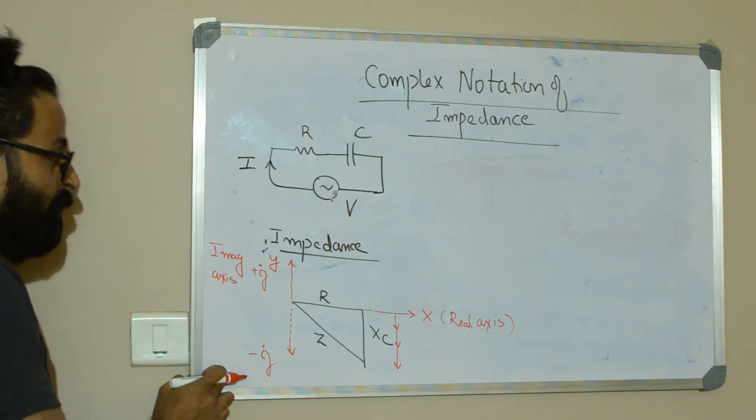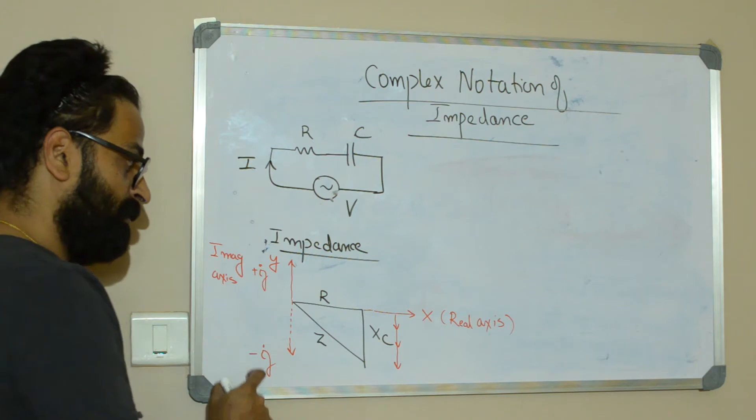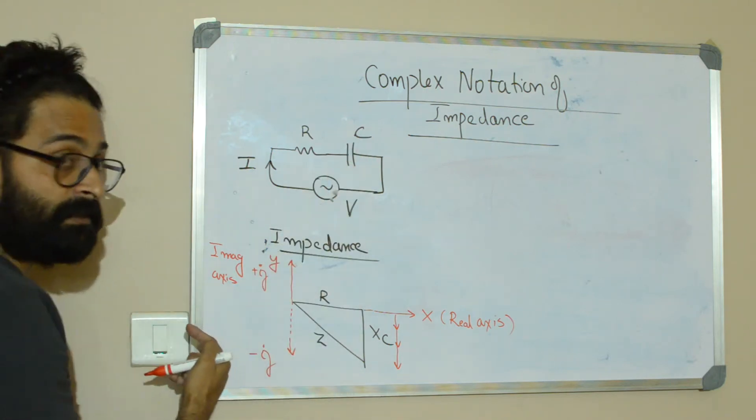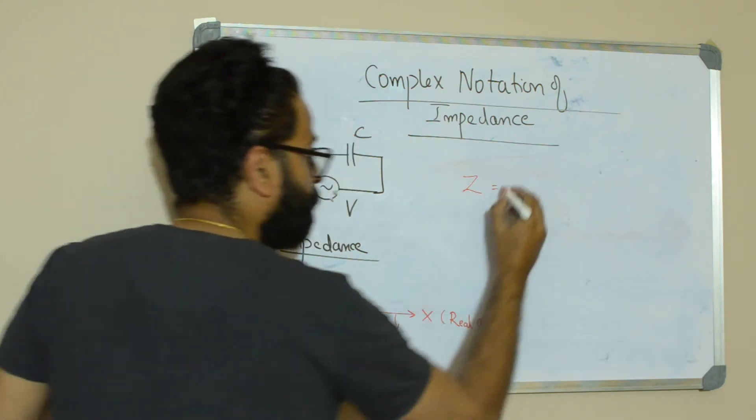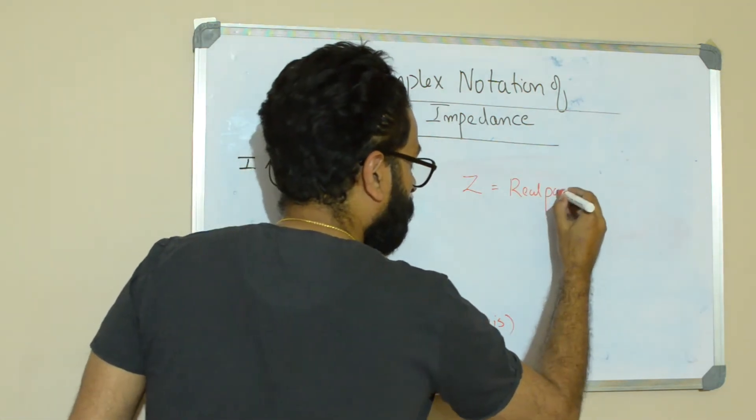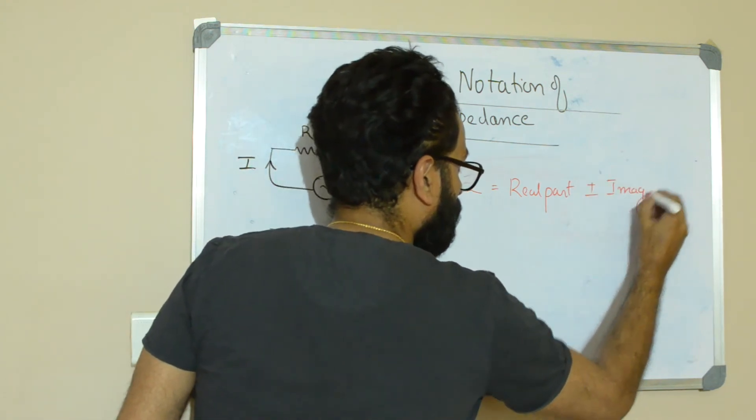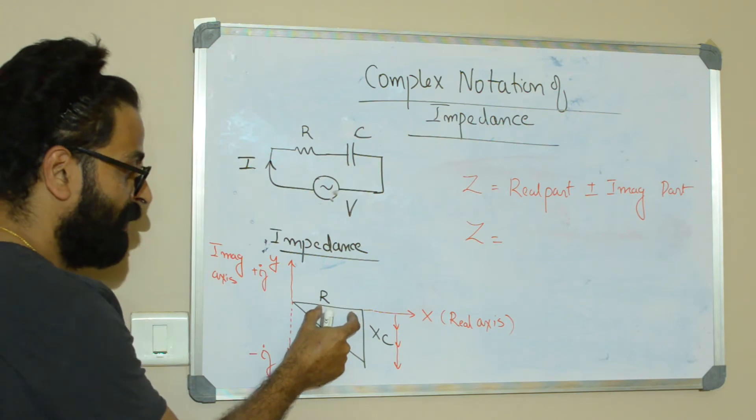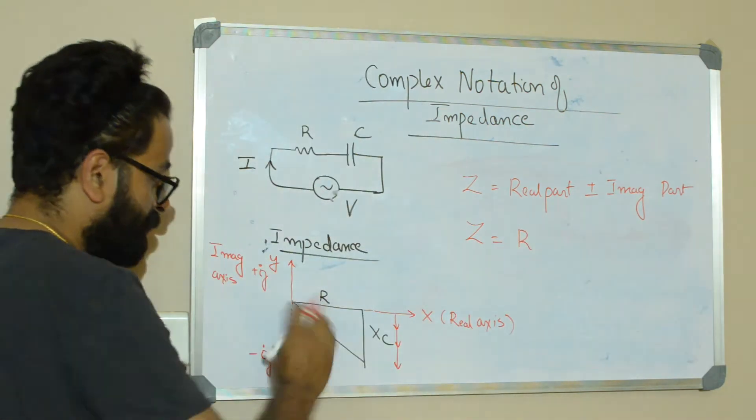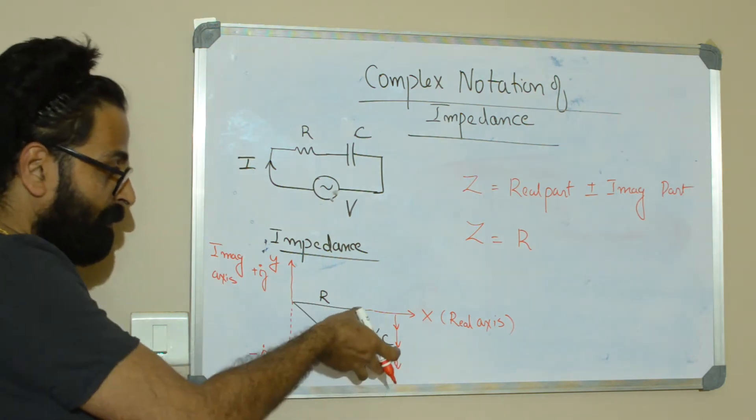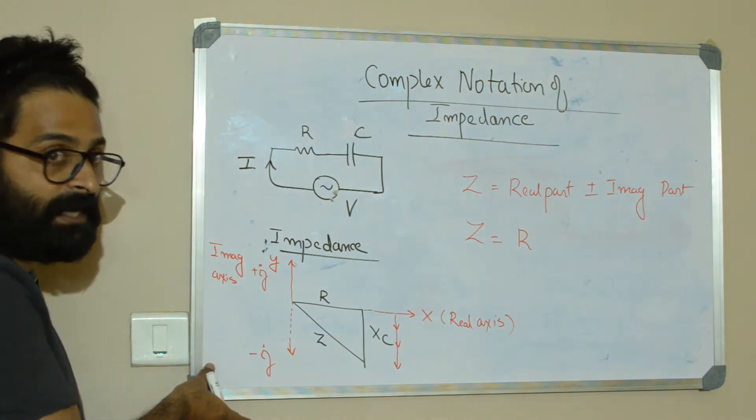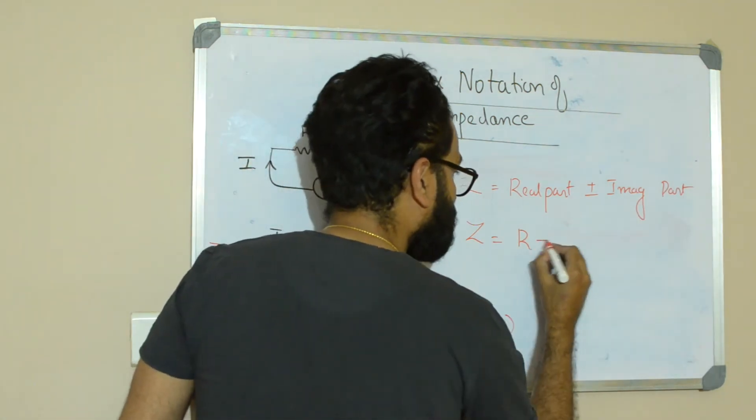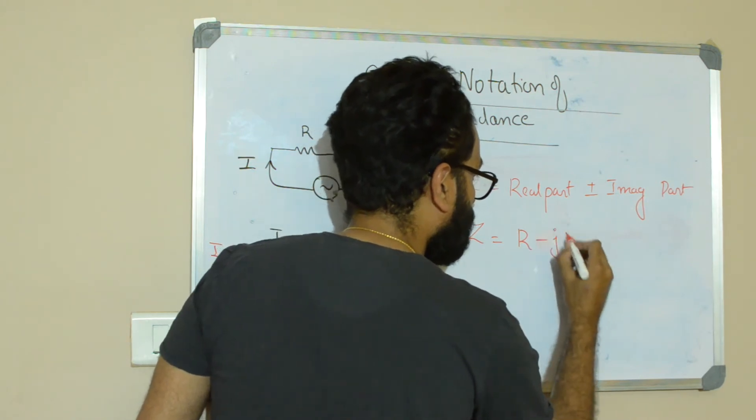That's the reason whenever you write in complex notation for a capacitive circuit - for an RC circuit - you would take Z is equal to the real part plus the imaginary part. For our context, the real part is the resistance R, and the imaginary part is nothing but the reactance which is projected along the imaginary axis. Here Xc is being projected along minus j axis, hence along with the sign you can write the imaginary part as minus j into Xc.